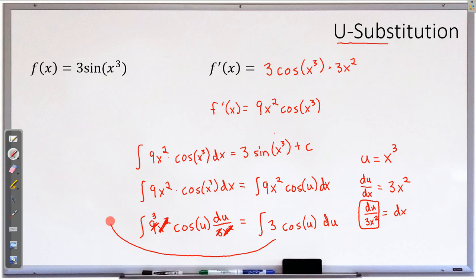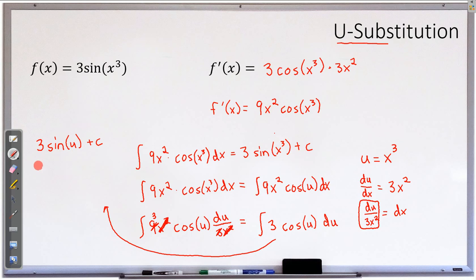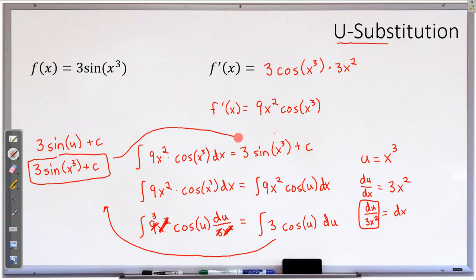Let's go up here. The 3 can be pulled out and it stays. The anti-derivative of cosine of u is sine of u plus c. Now, here comes the greatest calculus joke ever: we don't care about u, so we have to get rid of it. u is the same as x cubed, and so we have 3 sine of x cubed plus c, which is exactly what we needed.